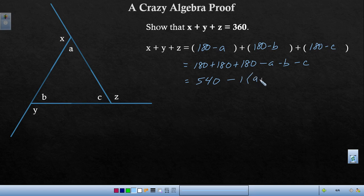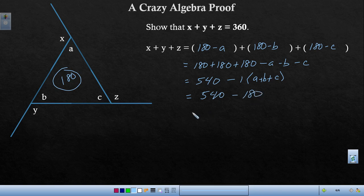Well, a plus b plus c is tasty. It's 180 degrees. So we end up with 540 minus 180, which is 360. And there we see that the three exterior angles of the triangle add up to 360 degrees.